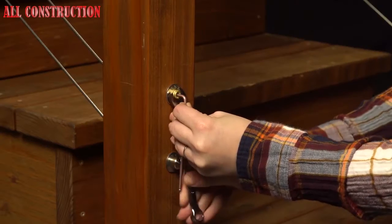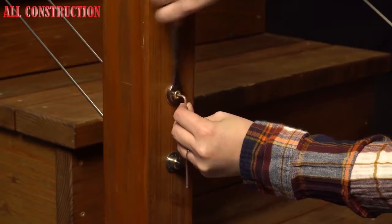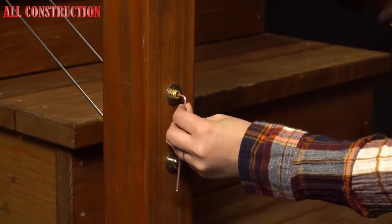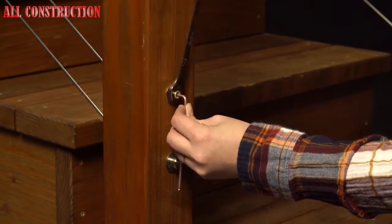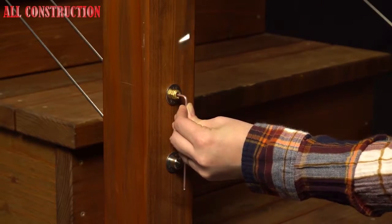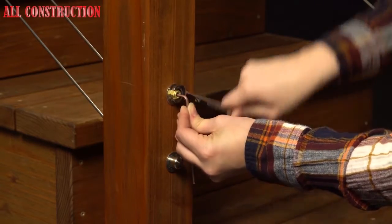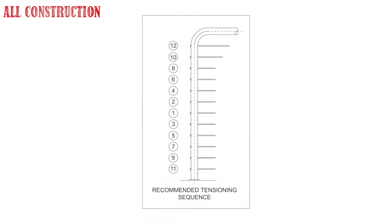Tension cables. Return to the threaded stud end post. Insert an eighth inch hex wrench into broached opening on the tip of the stud. Tighten the lock nut with a 7/16 inch wrench while holding the hex wrench to prevent the stud from turning. Tension all cables to desired amount in sequence beginning with the center cables moving up and down toward the top and bottom.